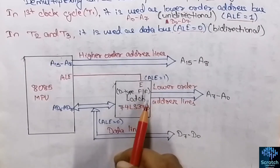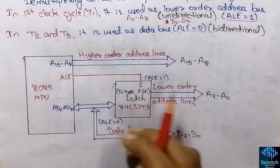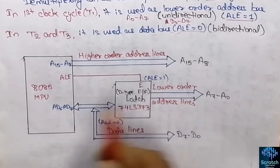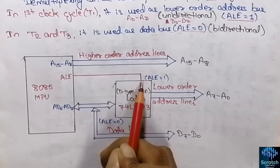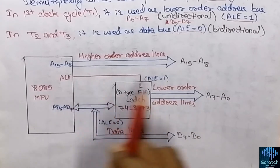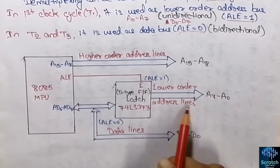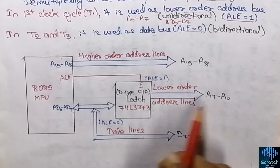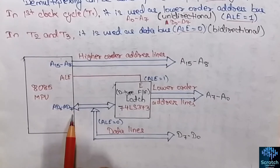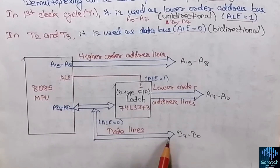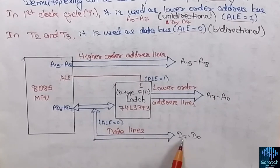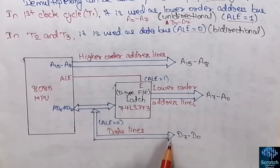During the first T-state in all machine cycles, the AD0 to AD7 lines act as the address bus because ALE becomes high. We get the lower-order address lines as the output when ALE is high. When ALE is 0, the AD0 to AD7 lines are used as the data lines, and the data appears on D7 to D0 lines. This occurs in the second T-state.